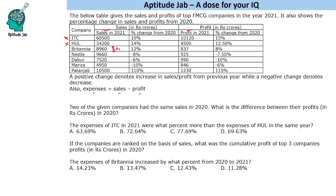Since Britannia's sales in 2021 are 8960 with a 12 percent increase, it had 8000 in 2020. Looking at Dabur, it is 6 percent less than 7520 — and 8000 minus 6 percent of 8000, which is 480, gives 7520. So the two companies are Britannia and Dabur, both having sales of 8000 crores in 2020. These are the only two such companies.